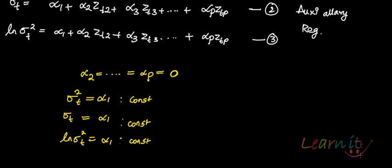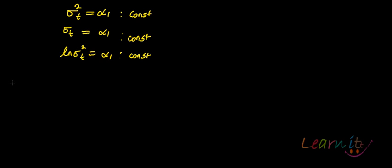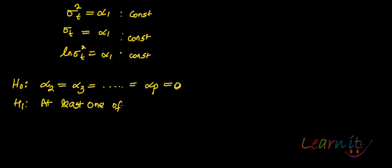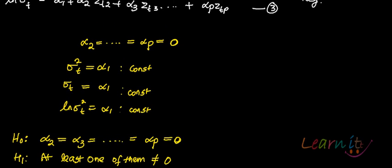So this is what you will test. Your null hypothesis is that alpha_2 through alpha_p in these auxiliary regressions are all equal to zero. The alternative is that at least one of them is not equal to zero, because even if at least one is not zero, you will have a different error variance for each observation.